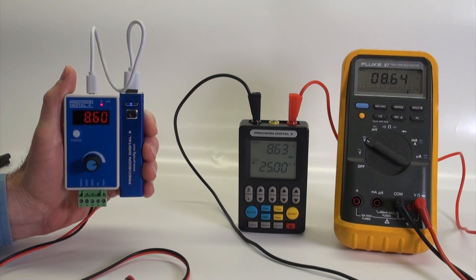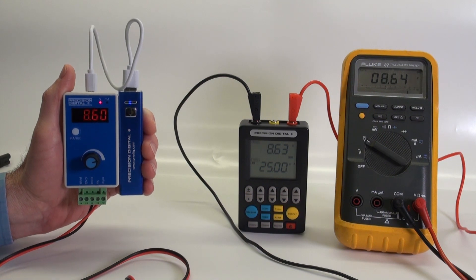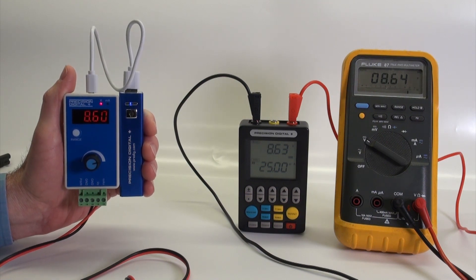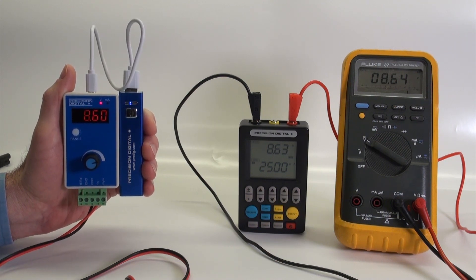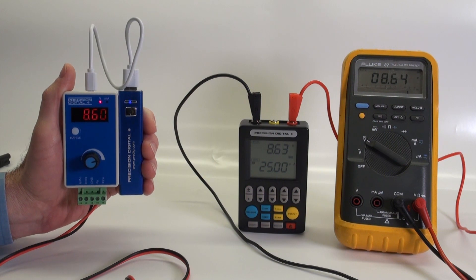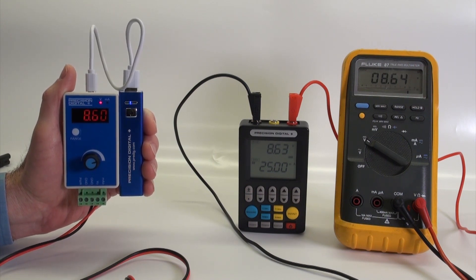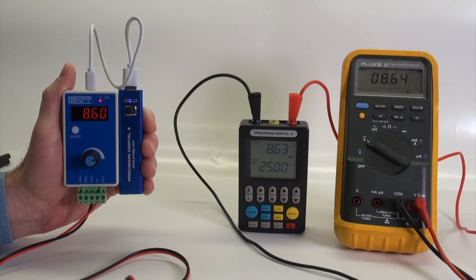Now I have the PD9502 connected up to Precision Digital's new PD9501 signal generator calibrator, which can calibrate signals like thermocouples, RTDs, current, voltage, and resistance. This demonstrates how accurate a simple low-cost signal generator can be versus a more sophisticated full-featured multimeter.